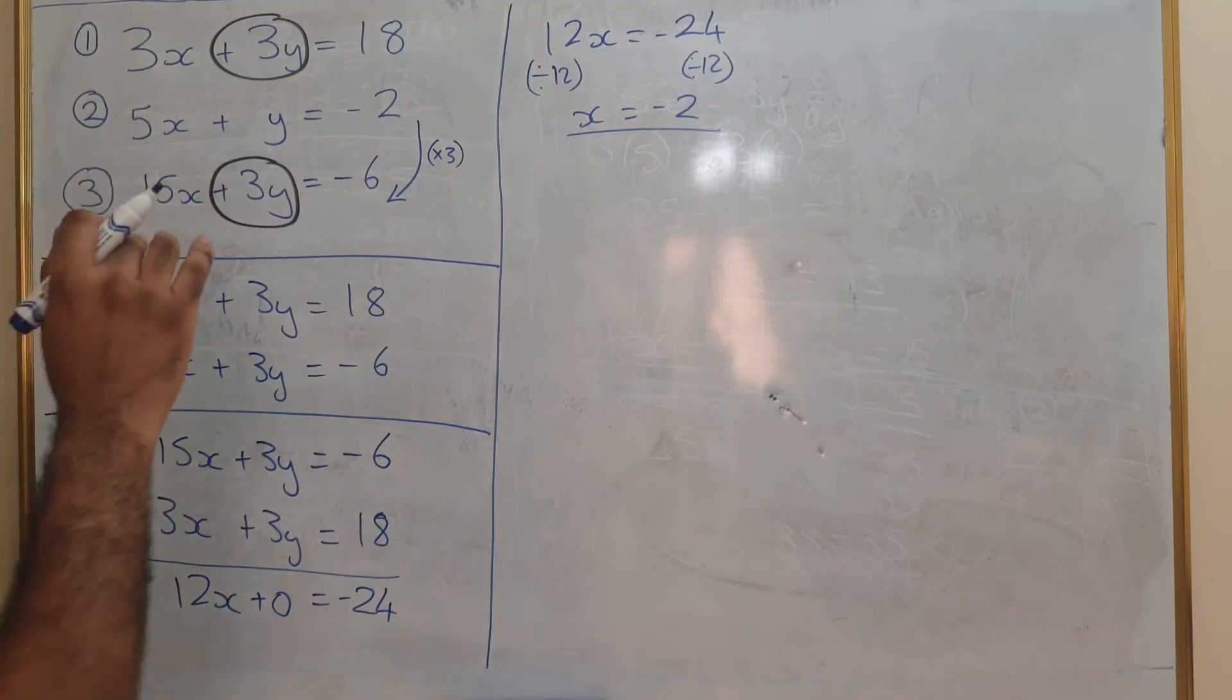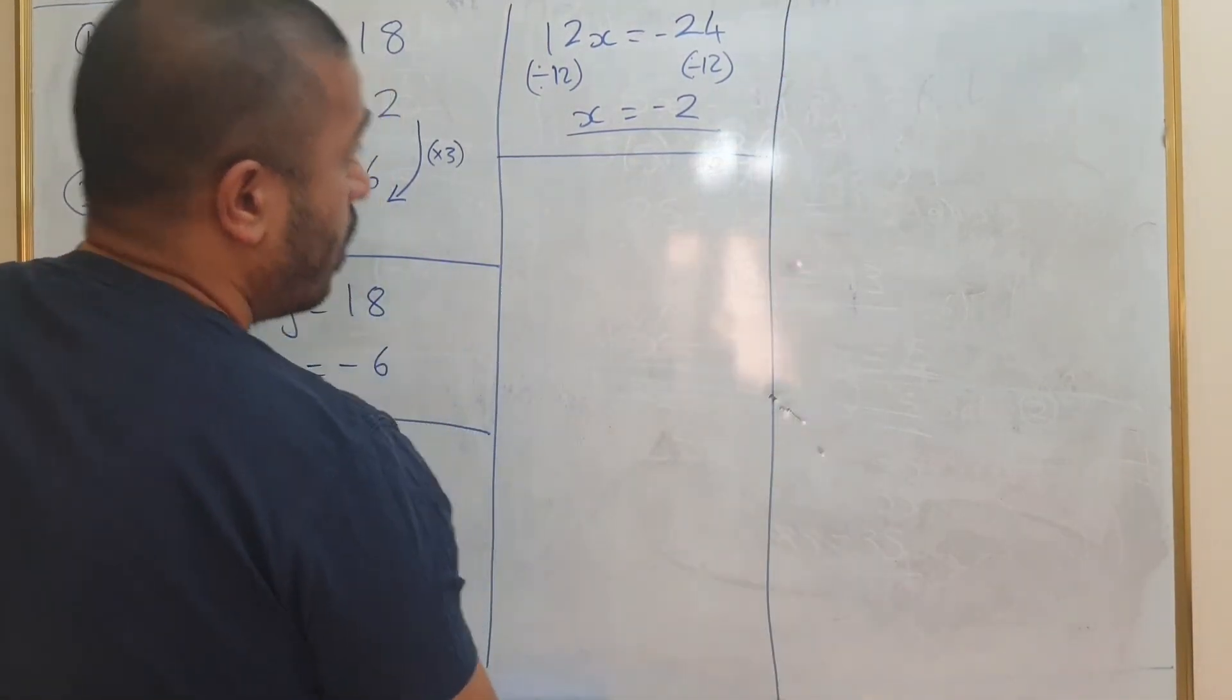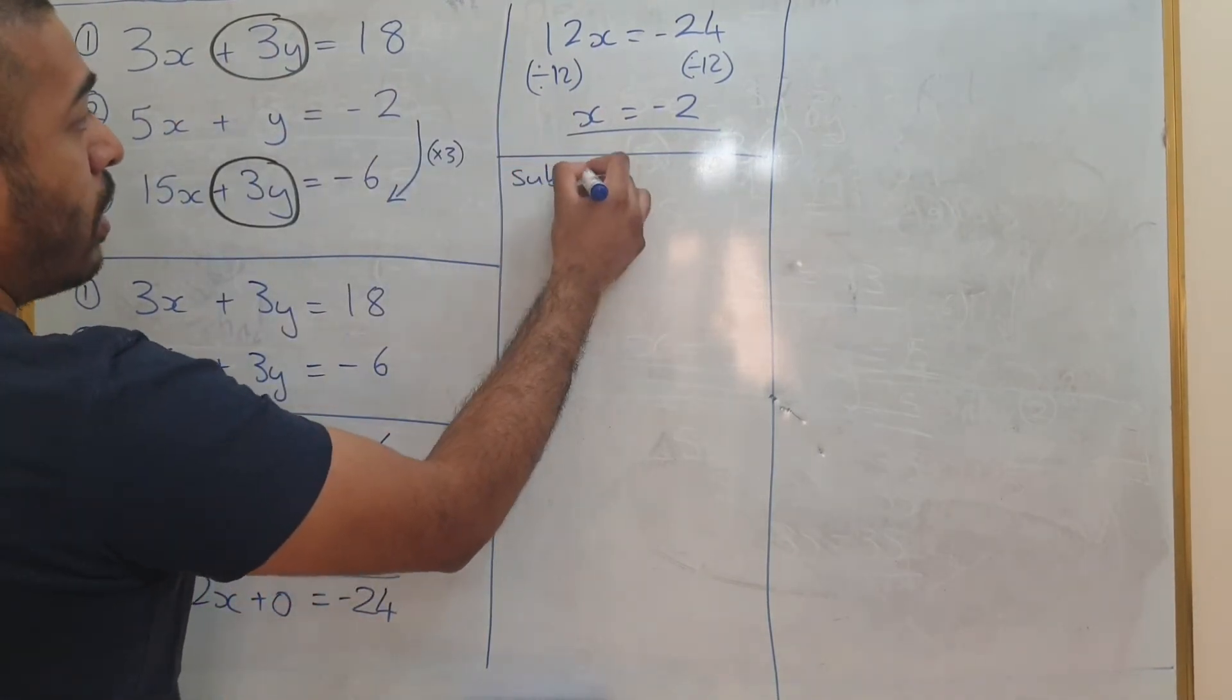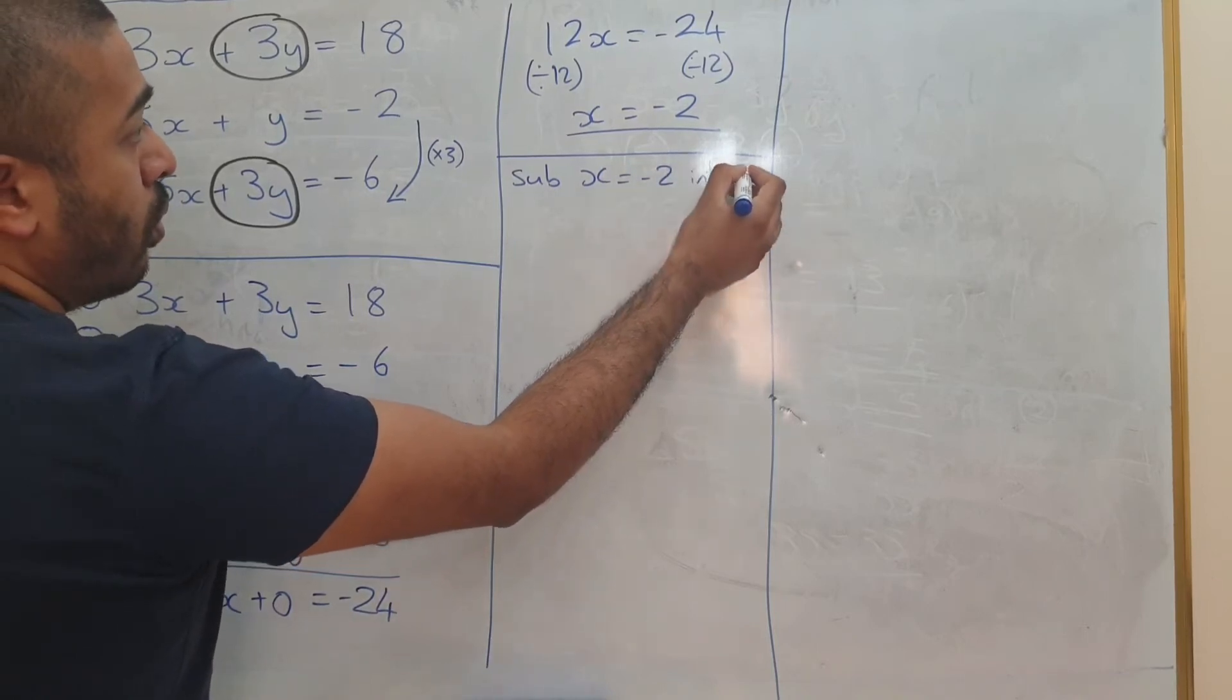Now, once I've got x equals minus 2, I'm going to substitute this back into equation 1. So sub x equals minus 2 into 1.